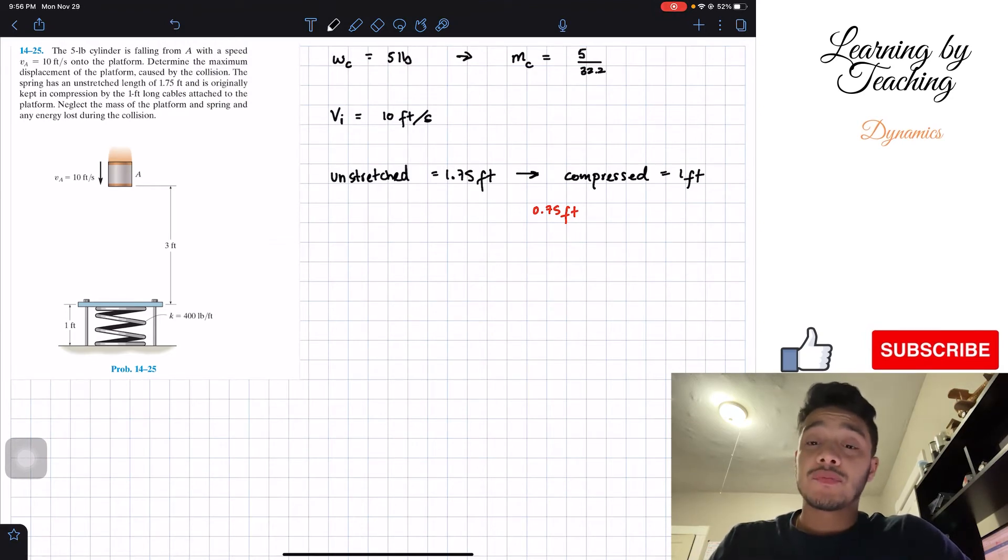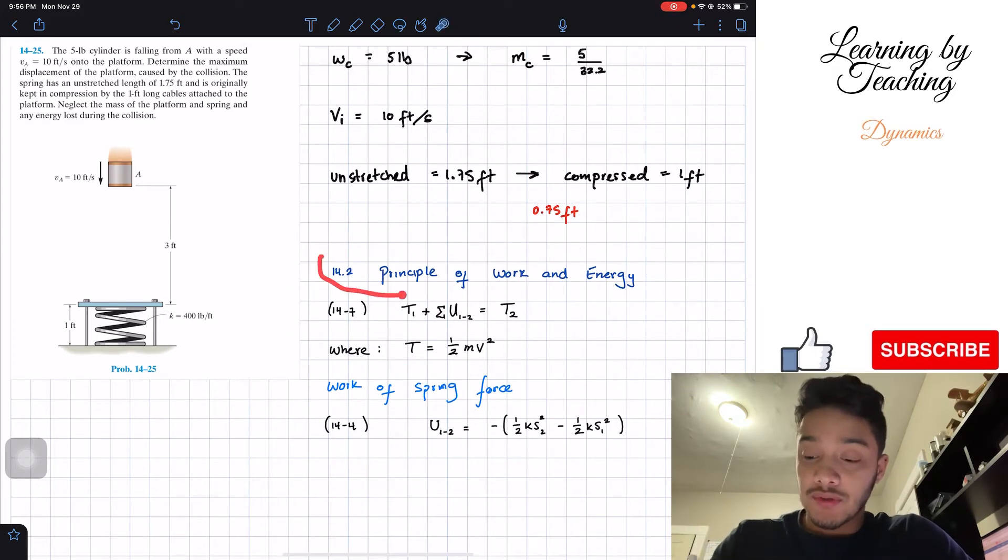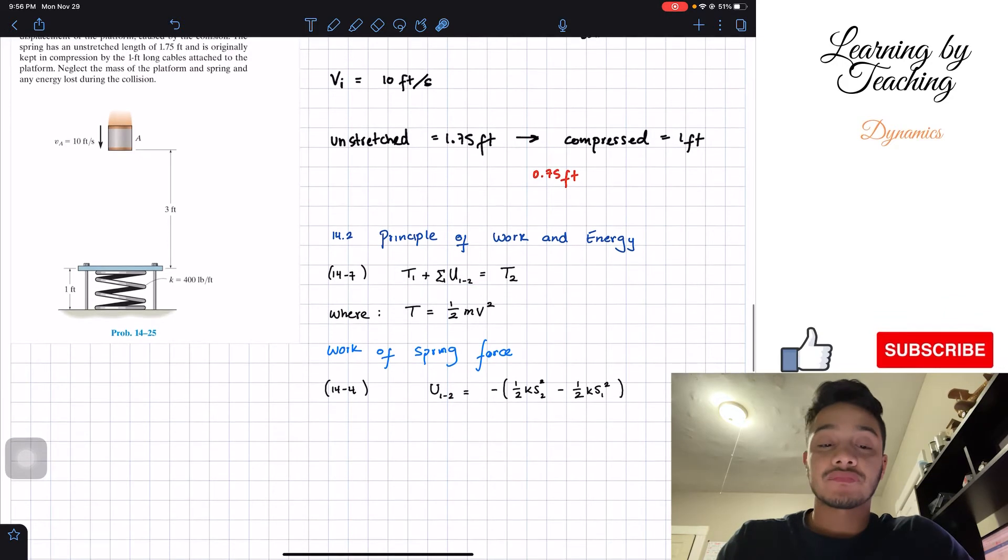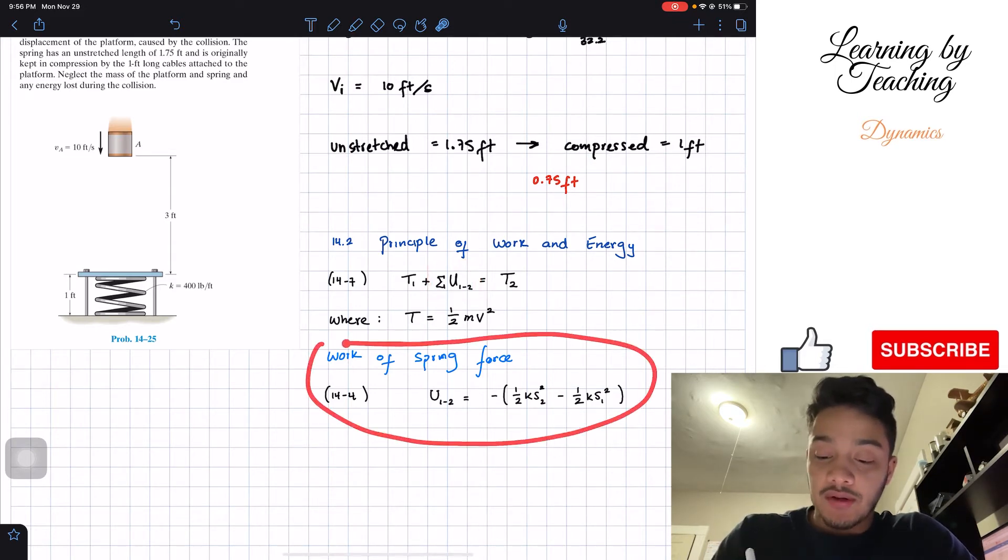In order to solve this problem, we're going to utilize our chapter 14, which is basically the principle of work and energy. We're going to utilize this principle where we have the equation given by the book, equation 14.7. We got the kinetic plus the work has to be equal to the final kinetic. By kinetic I mean one half mass times velocity squared. Since we need to calculate the work in here, we need to add all the forces and we need to know what's the work of a spring, of the spring force.